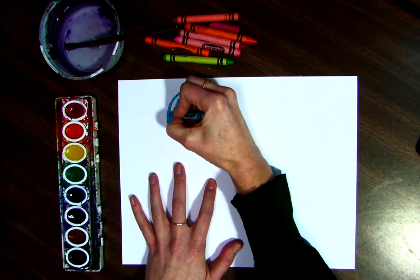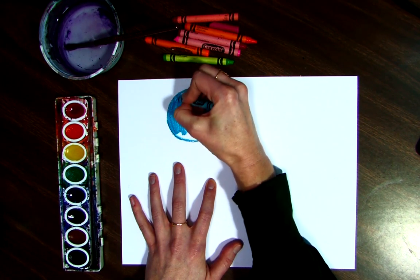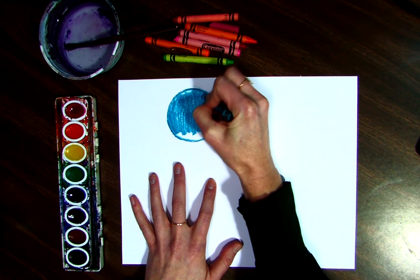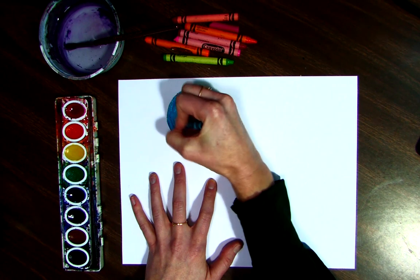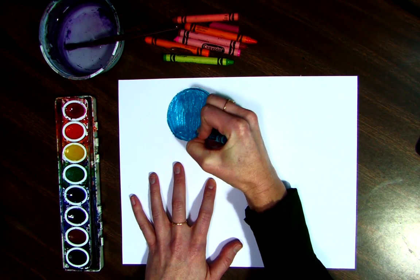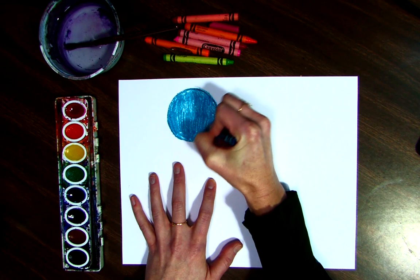So we'll start our picture with that circle, and again, you can add that anywhere to your picture. Color in your circle whatever color you want. You can even do it more than one color if you want.